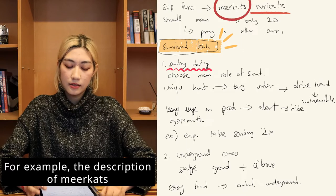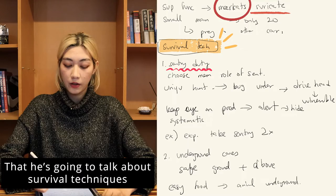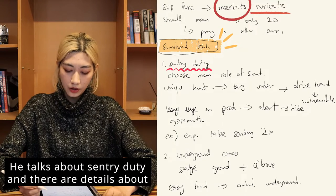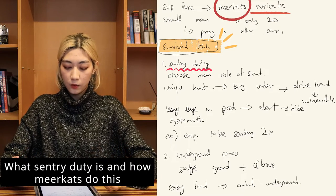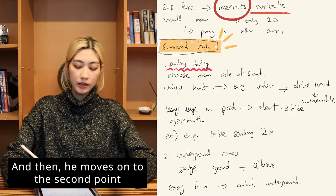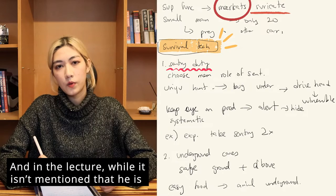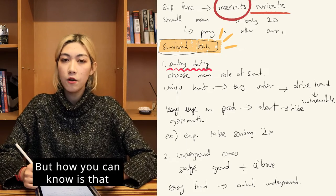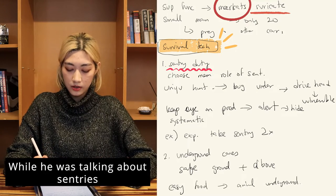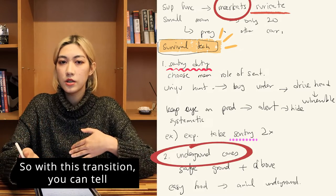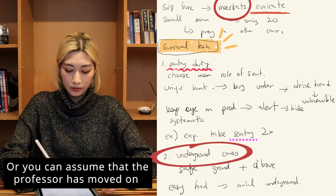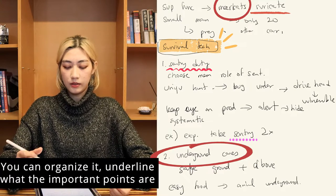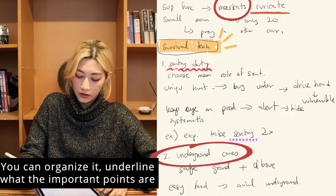For example, the description of meerkats comes before the professor announces the survival techniques topic, so it's not really relevant. Moving on to the first point — sentry duty — there are details about what it is, how meerkats do it, and why. For the second point, you can detect the transition when the professor suddenly starts talking about underground caves after discussing sentries. Without explicitly saying 'second point,' the shift in topic signals a new technique. You can underline the important points in your notes and then answer the question.